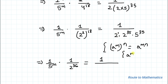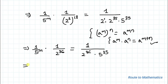We now apply the rule: a to the power m multiplied with a to the power n equals a to the power (m+n). So on the right side, 1/2 multiplied with 2 to the power 35 gives us 2 to the power (1+35) which is 2 to the power 36, multiplied with 5 to the power 35. This implies 1 by 5 to the power m equals 2 to the power 36 divided by 2 to the power 36, multiplied with 5 to the power 35.